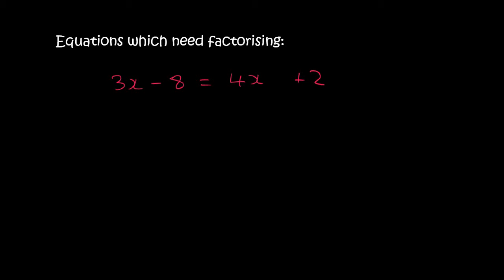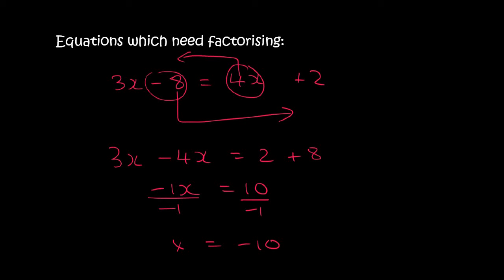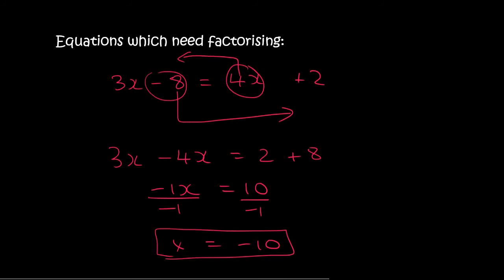If I give you a question like this one — which does not have any x squareds — we treat it the normal way: take the x's to one side and the numbers to the other side. That becomes 3x minus 4x equals 2, and then the minus 8 goes over and becomes plus 8. So 3x minus 4x is minus x, equals 10. I then divide both sides by minus 1, and so x equals negative 10. But if there was an x squared that didn't cancel out, you do the method I showed you, taking everything to one side and making the other side equal to 0.